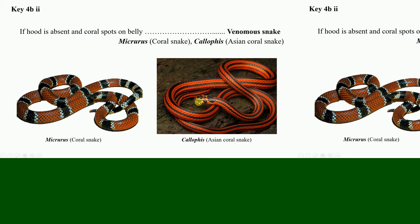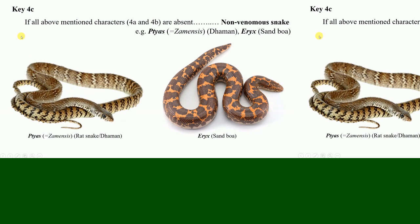Coral snakes also have the third supralabial scale present but the hood is absent. If all the characteristics in 4A and 4B are absent, the snake is 100% non-venomous — for example, Ptyas (rat snake, dhaman in Marathi), Eryx (sand boa, mandul in Marathi).